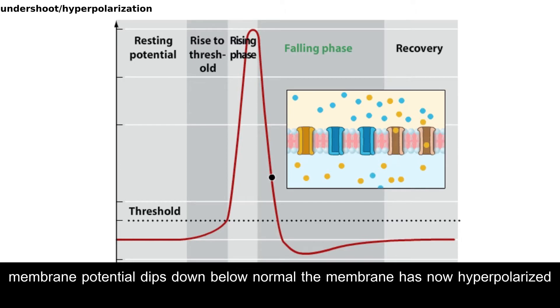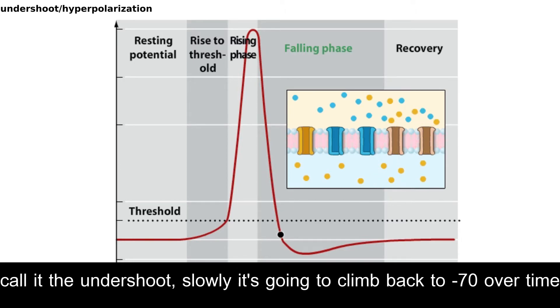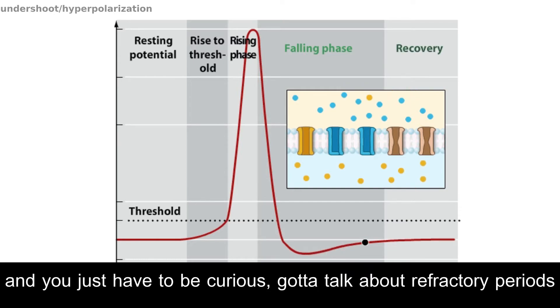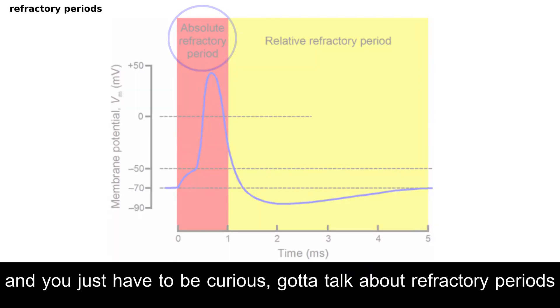Membrane potential dips down below normal, the membrane has now hyperpolarized. That's the undershoot, slowly is going to climb back to negative 70 over time. And you just have to be curious, gotta talk about refractory periods, split it in two.